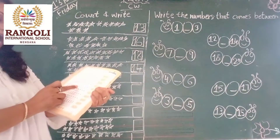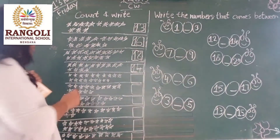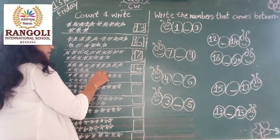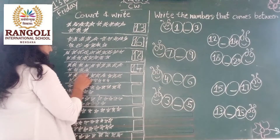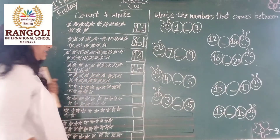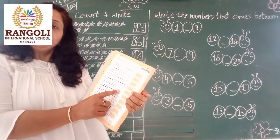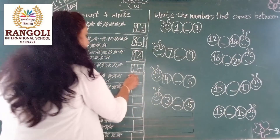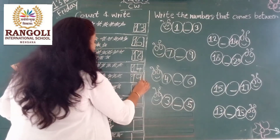Then how many blue stars? Come with me: 1, 2, 3, 4, 5, 6, 7, 8, 9, 10, 11, 12, 13, 14, 15, 16, 17, 18, 19. How many stars? 19. So, right here write 19 number.